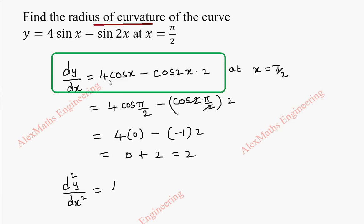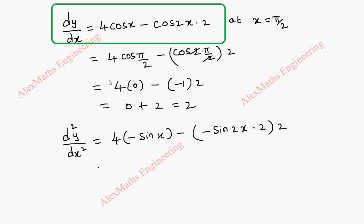Differentiation of 4 cos x is 4 into minus sin x minus cos 2x differentiation is minus sin 2x into 2 and outside there is one more 2. So we are going to rearrange this, this is minus 4 sin x plus these 2 we can multiply 4 sin 2x.